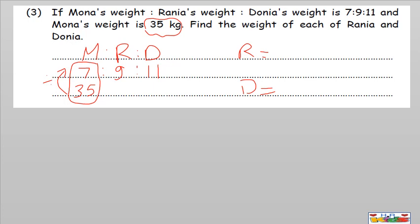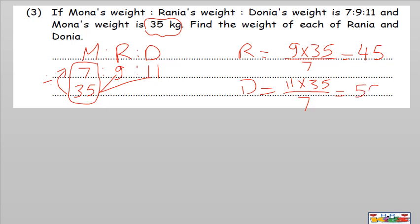The two numbers under each other are used for multiply and divide. To find Rania: 9 by 35 divided by 7. That is 35 divided by 7 — always divide numbers down by numbers up, then multiply by 9. And again, 11 by 35 divided by 7. So 35 divided by 7 equals 5; 5 by 9 equals 45 kg for Rania, and 5 by 11 equals 55 kilograms for Donia.